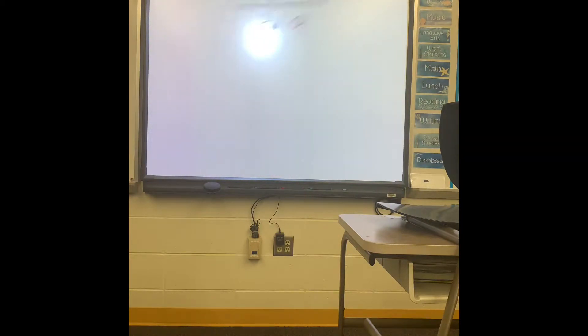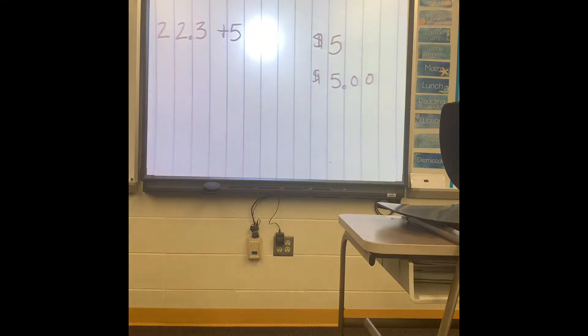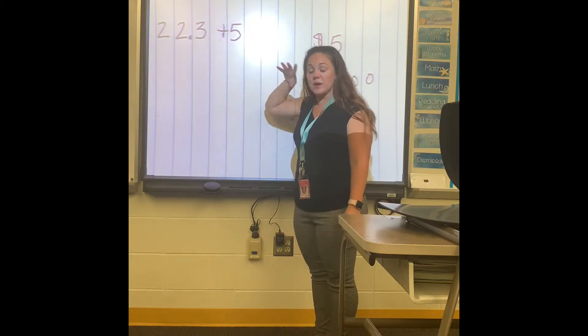This gets a little bit harder if they have a whole number. So I will show you. So the students might see this. So you have 22.3 plus 5. What I explain to the students is this is like money. If I told someone I was bringing them $5, you can write it like that, or you can write it like this.